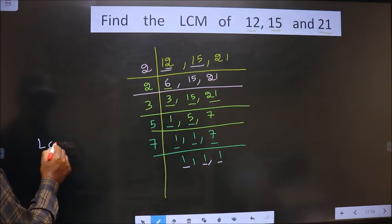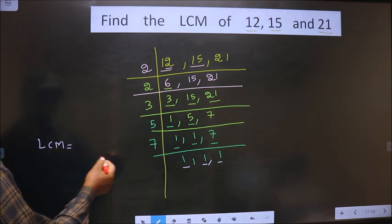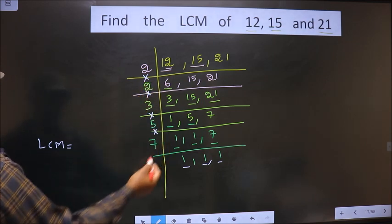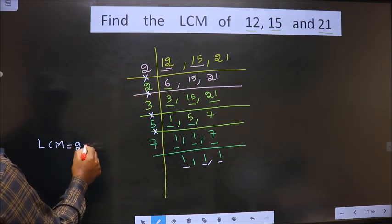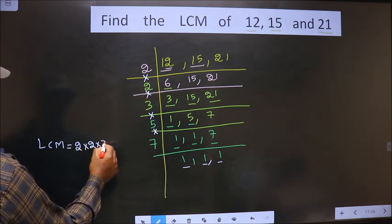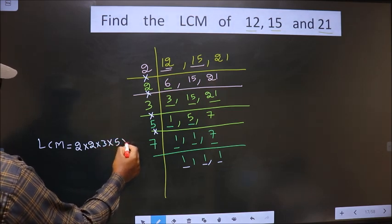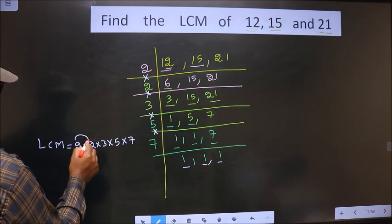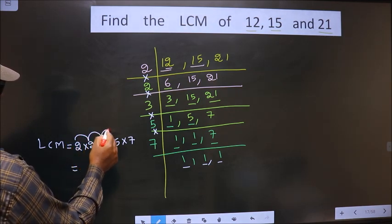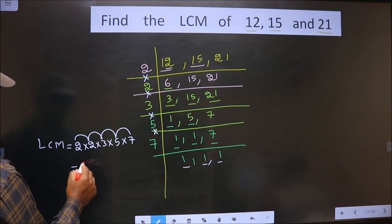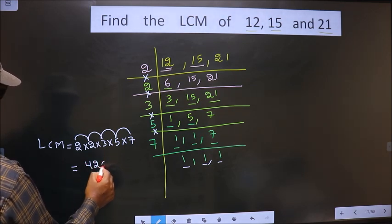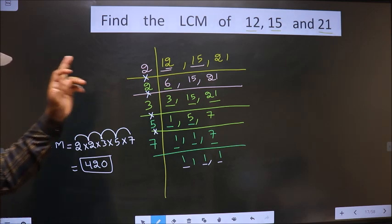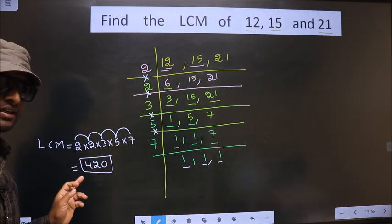So now our LCM is the product of these numbers. That is 2 into 2 into 3 into 5 into 7. So 2, 2 is 4. 4, 3 is 12. 12, 5 is 60. 60 into 7 is 420 is our answer. Am I clear?